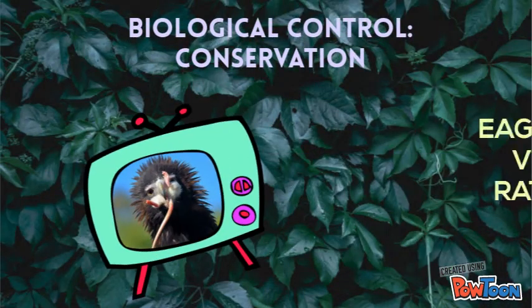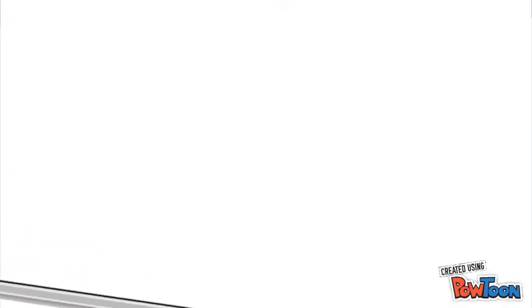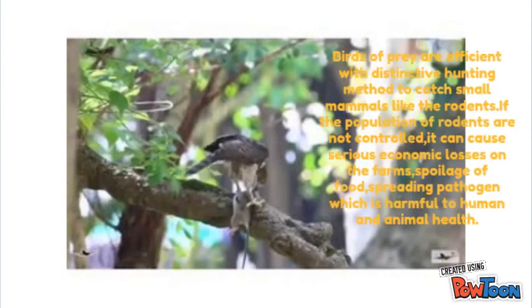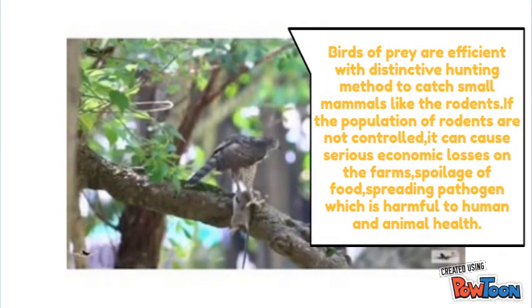Conservation involves existing natural enemies in an environment. Birds of prey are efficient with a distinctive hunting method to catch small mammals like rodents.